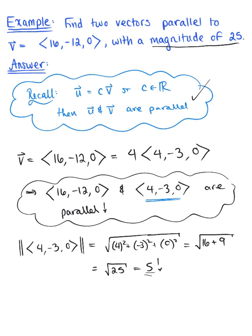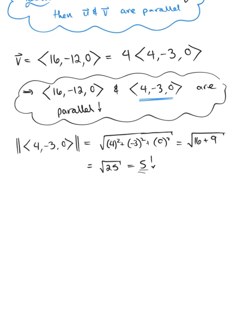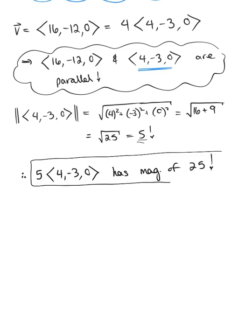We want two vectors that have a magnitude of 25. So in order to find that, we simply need to multiply this smaller vector by 5. So therefore, we can say that 5 times the vector 4, negative 3, 0, has a magnitude of 25.